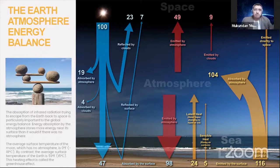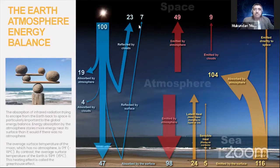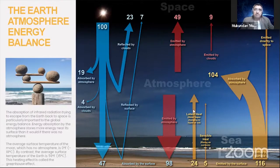At the outer atmosphere level, 100 units come in and what goes out is 23 reflected by clouds, 7 by the surface, 49 emitted by the atmosphere, and 9 reflected by clouds — distinguishing short-wave radiation from the Sun and long-wave radiation from Earth itself. The balance of 100 in and 100 out is clearly maintained on the outer surface of the atmosphere.